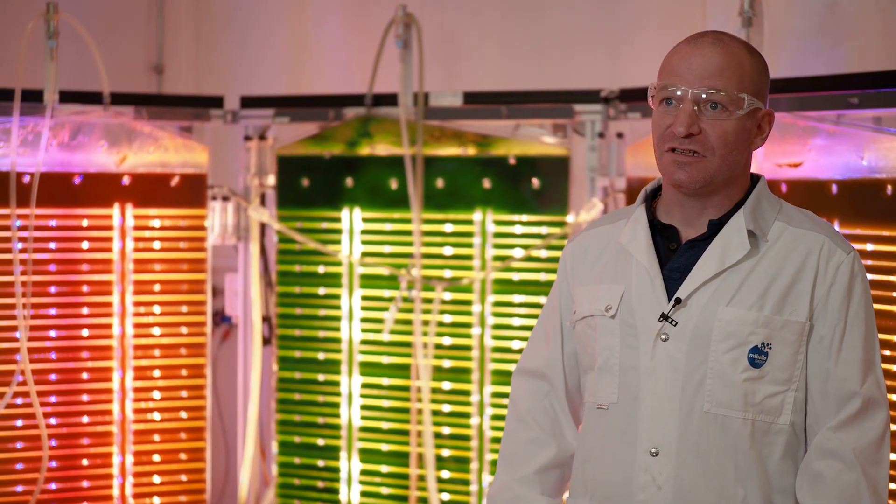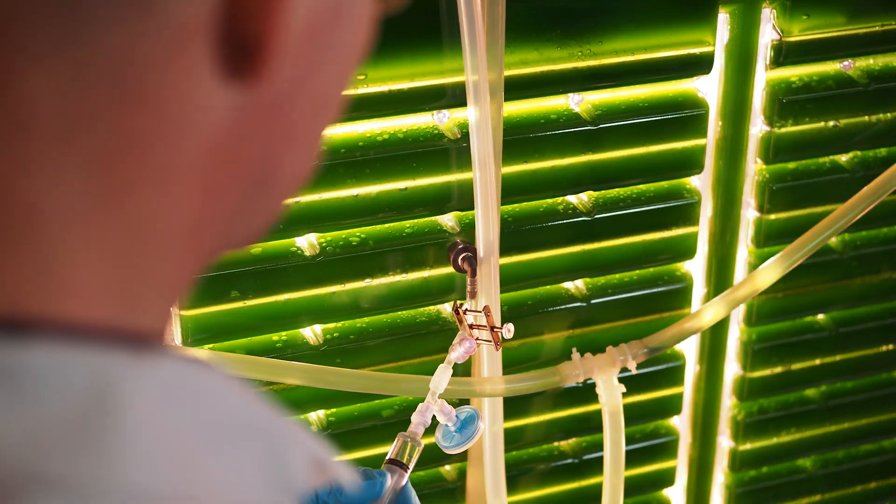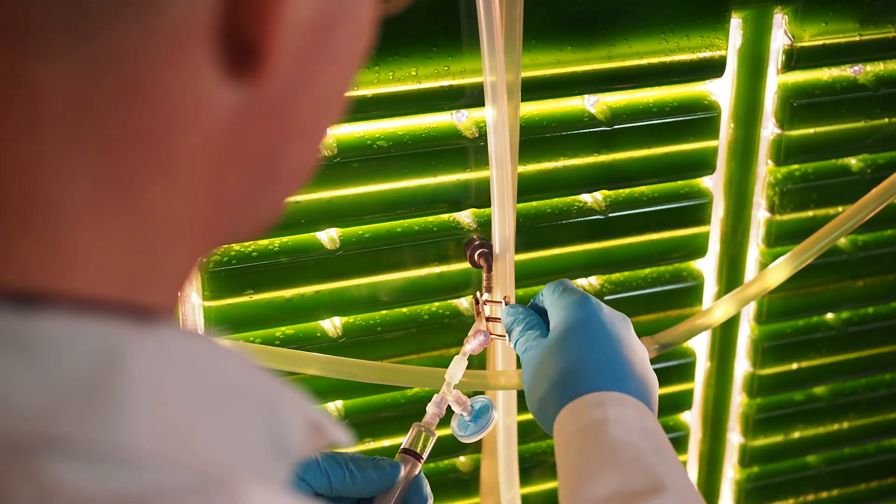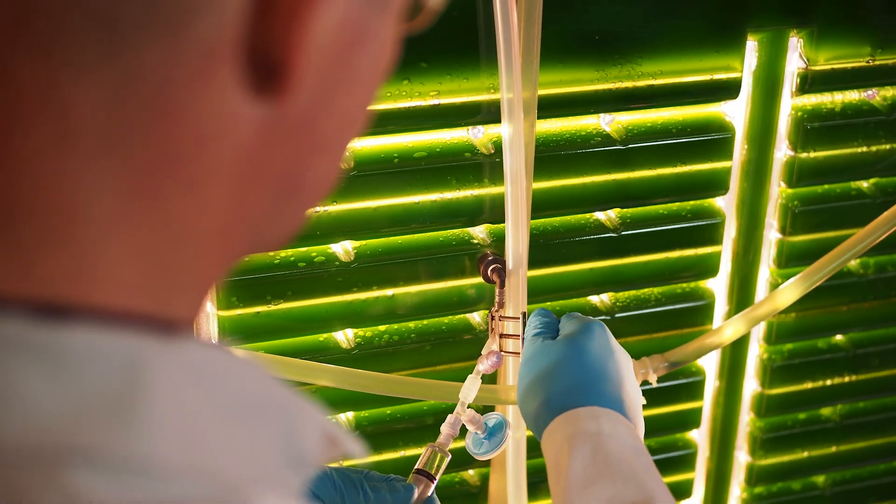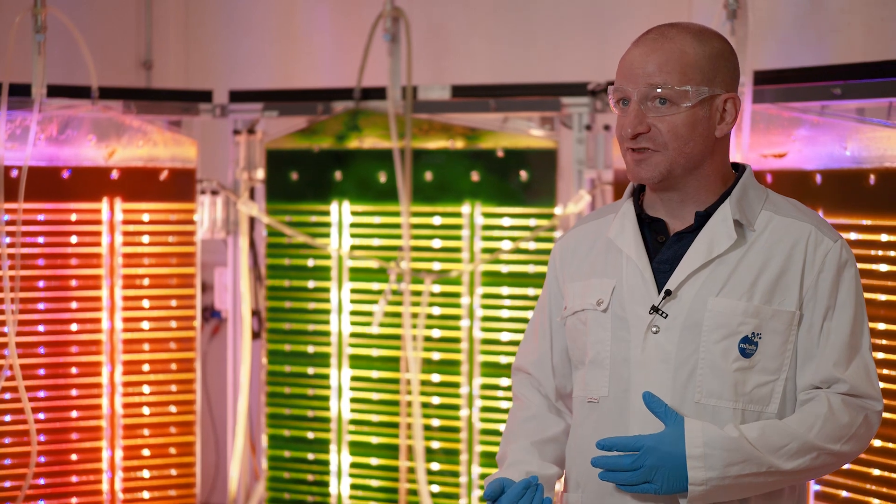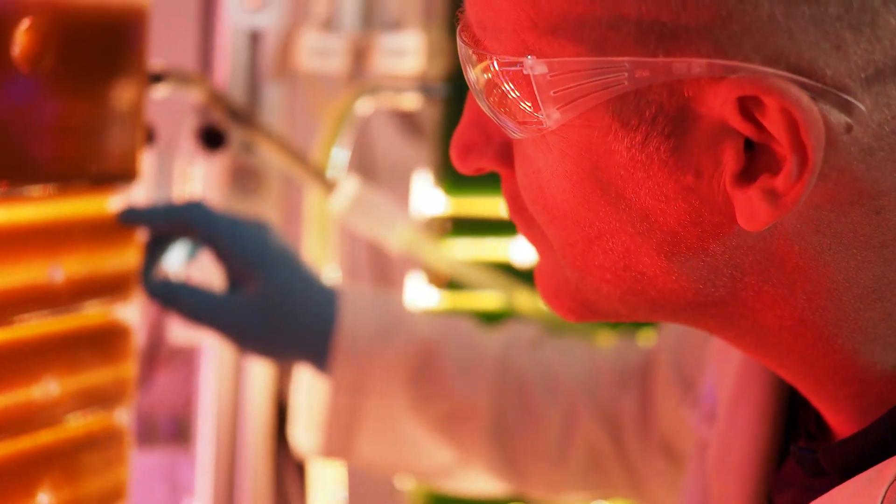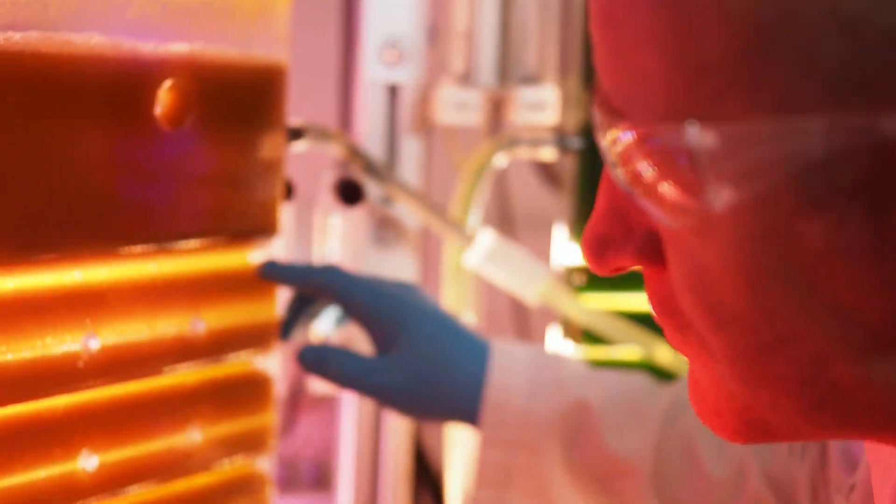In springtime they are living in a green stage where they produce chlorophyll and they grow. When summer is coming and the UV radiation is increasing, they have to protect themselves against the UV radiation by producing carotenoids out of the chlorophyll. This is why they get red.